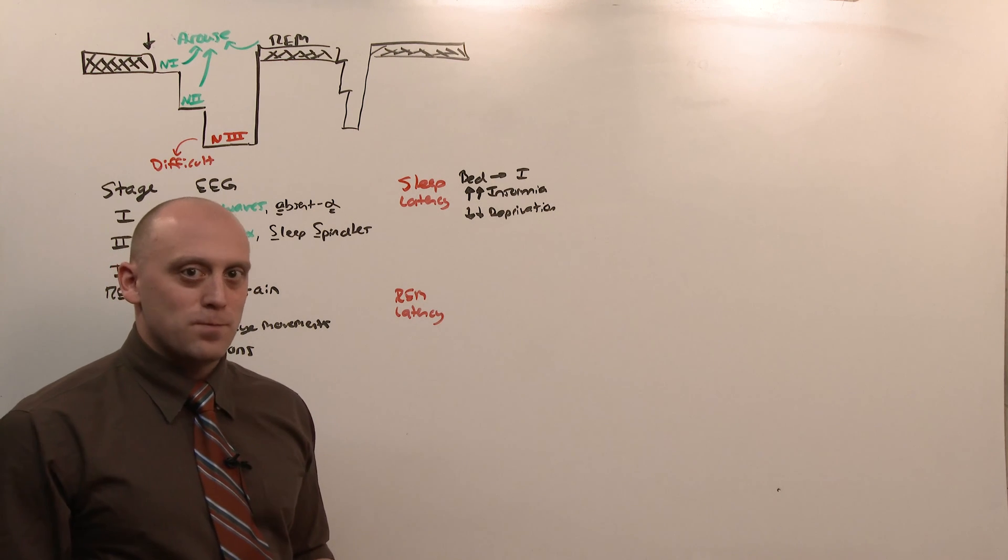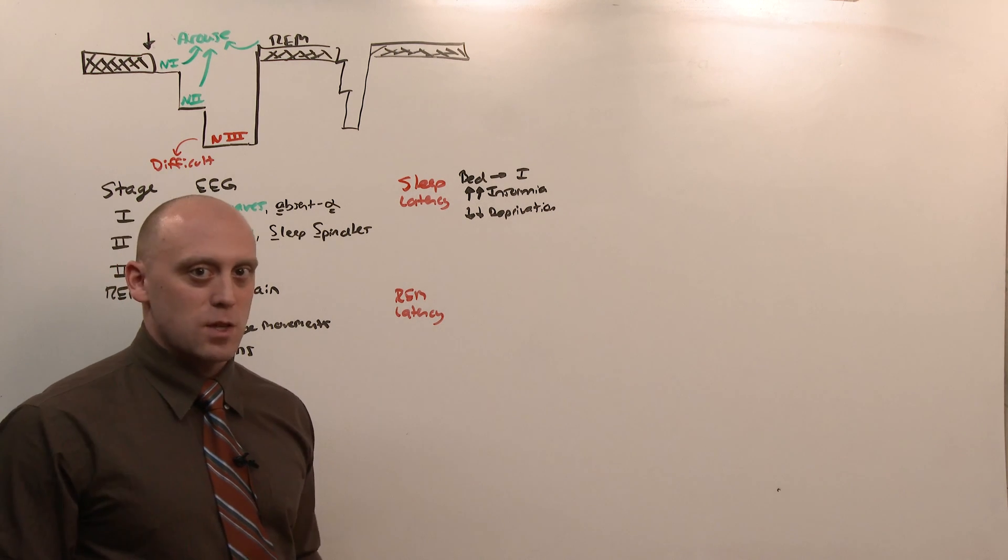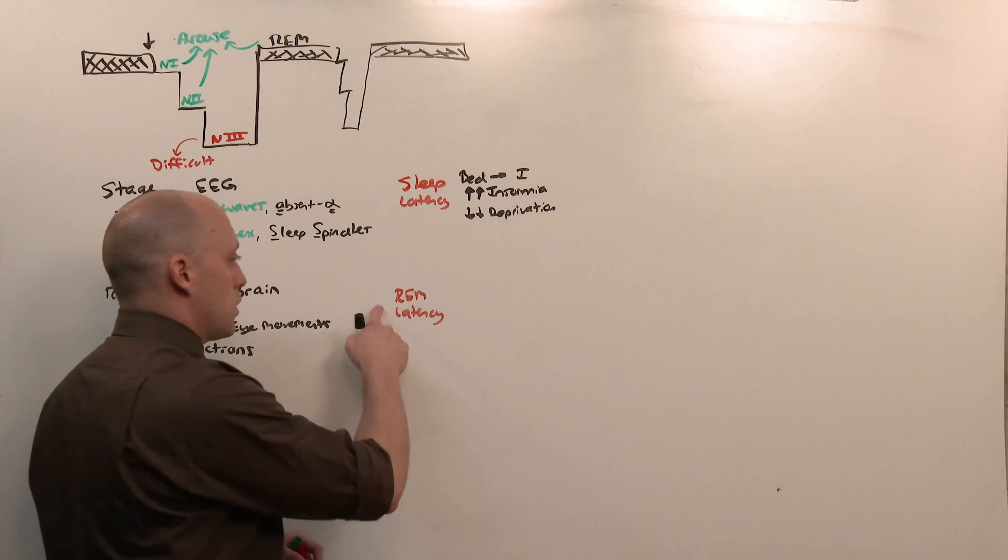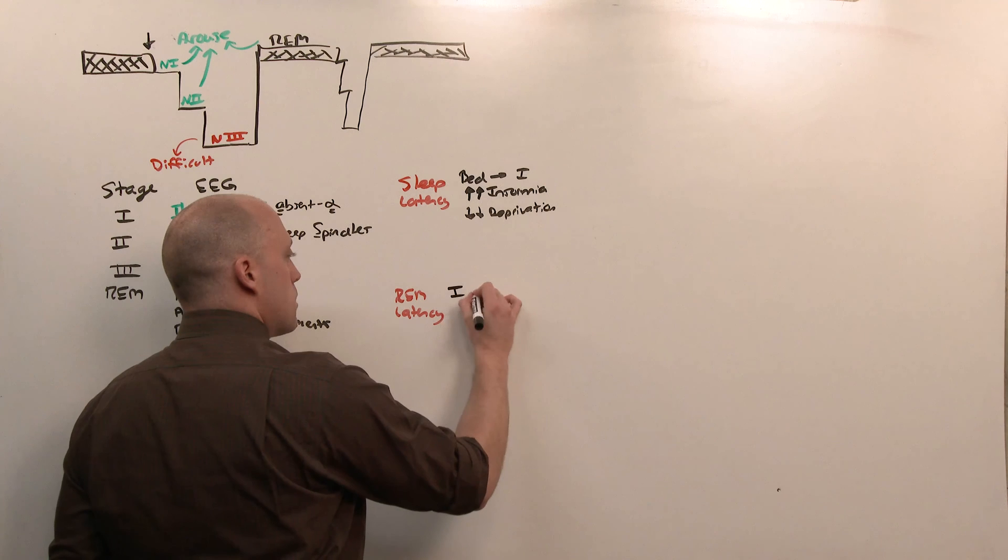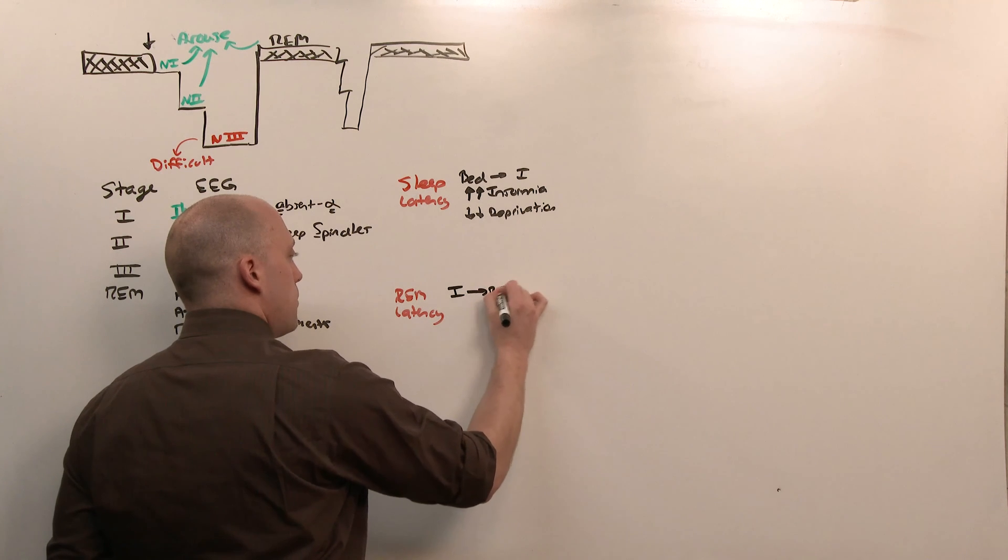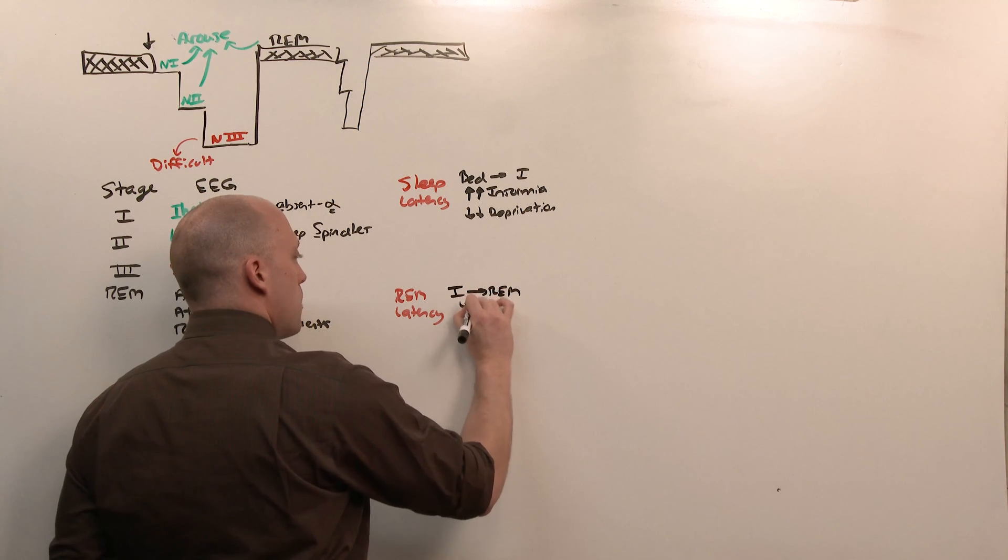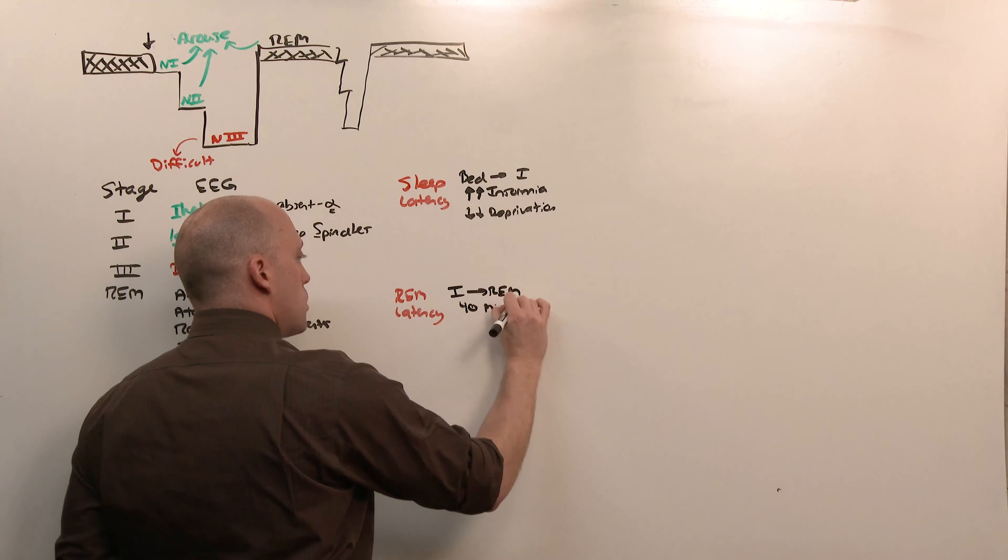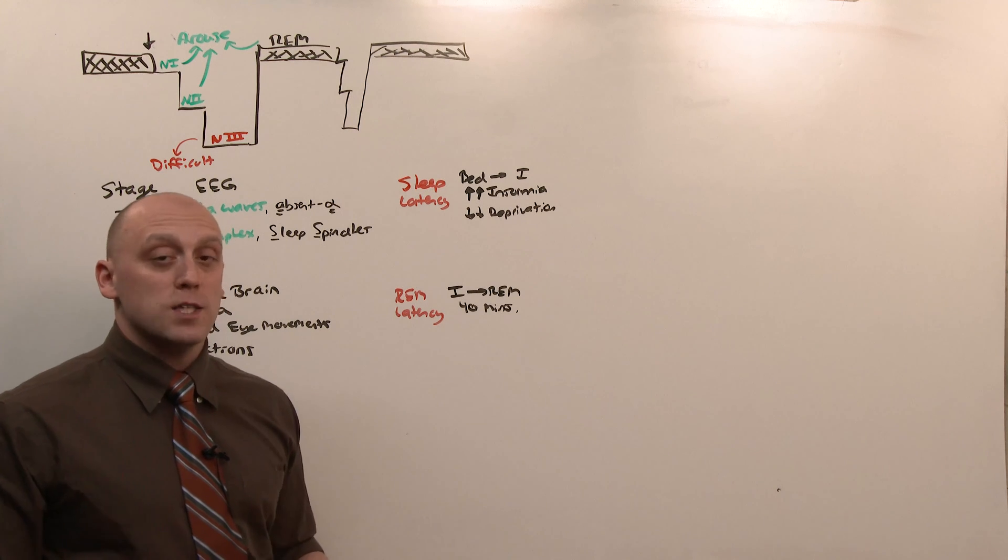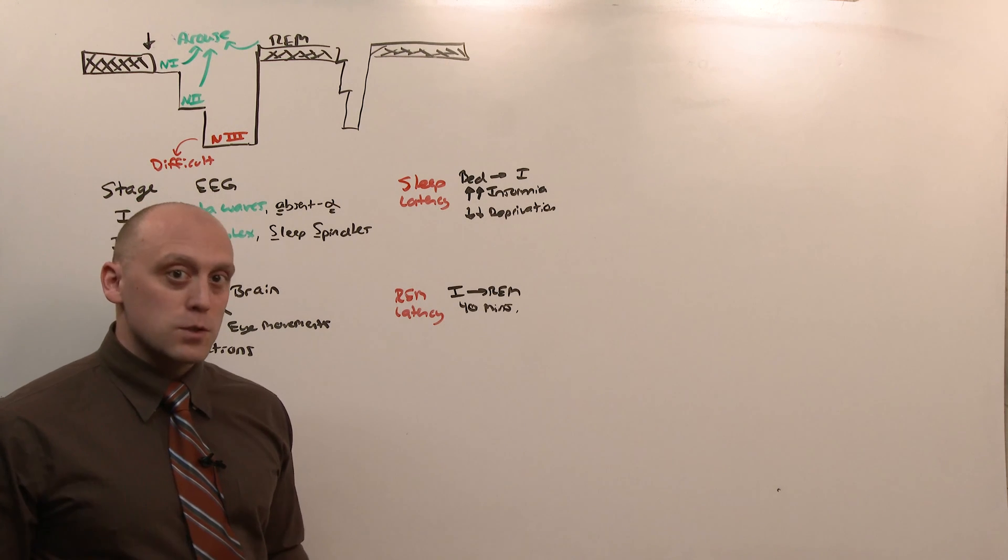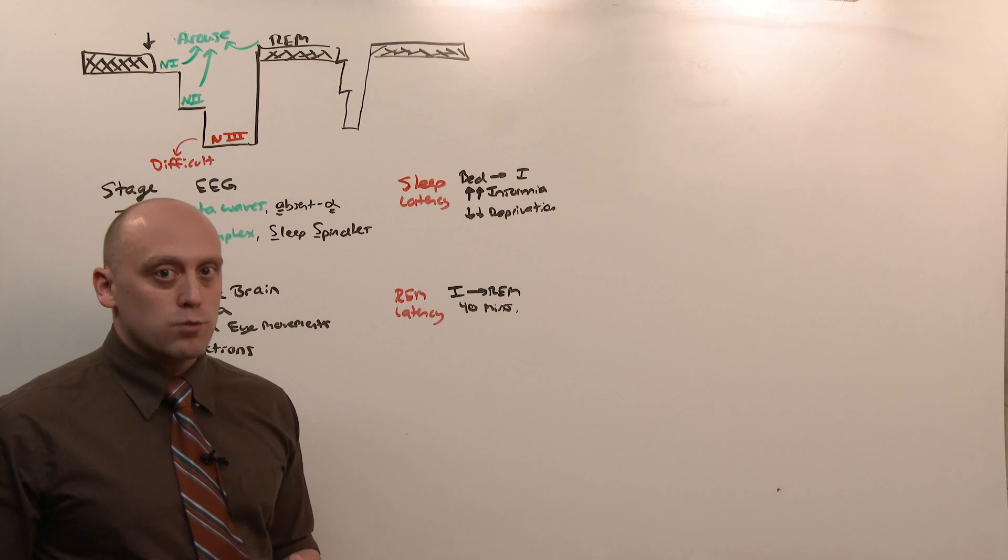Sleep latency is influenced by the amount of time you've had sleep and also other disease states. You need sleep, so not sleeping makes it easier to get to sleep. But you also need restful sleep - that's REM latency. The amount of time it takes from when you've entered sleep stage one to get to REM. This is normally about 40 minutes, which means if you take short naps, you're not entering REM. So you're not getting really restful sleep.